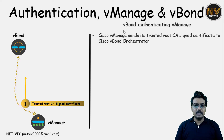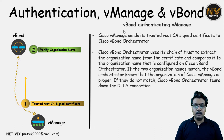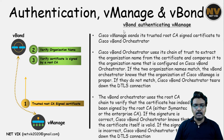Let's start with vBond authenticating vManage. First, vManage sends its signed certificate to the vBond. vBond will verify the organization name and then validate the signed certificate. Once this is successful, one way of authentication is done.